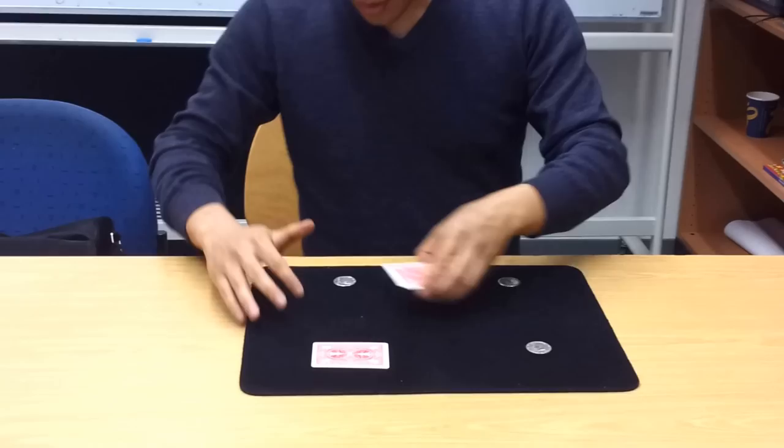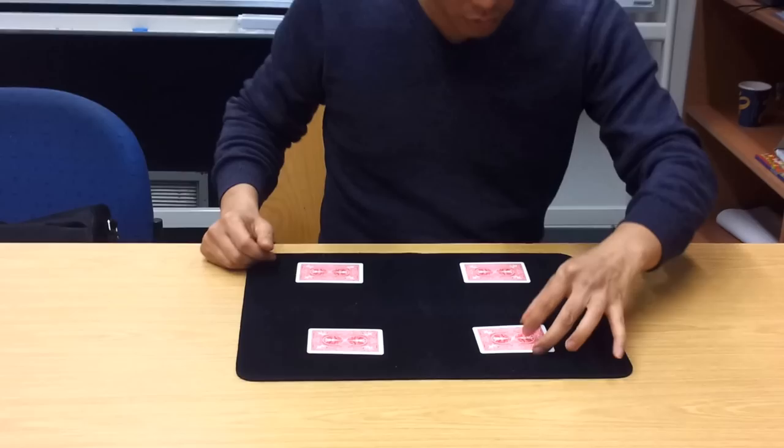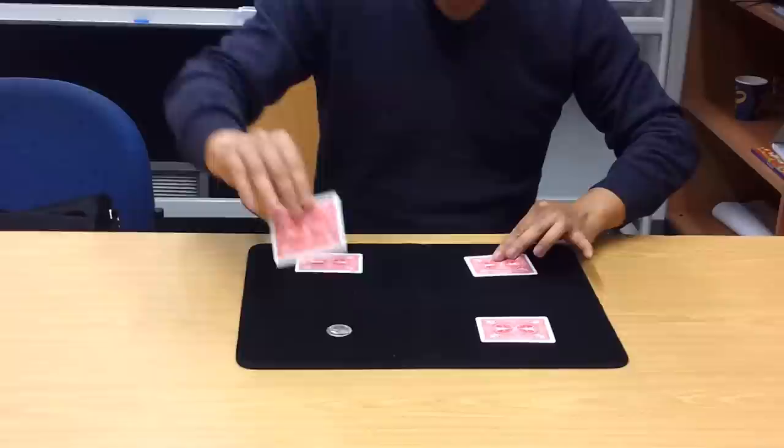You no longer have the element of surprise because I'm telling you what's going to happen. You even know where. Keep your eyes on that corner, okay? The other coins will fly from their corners and magically land underneath that card.